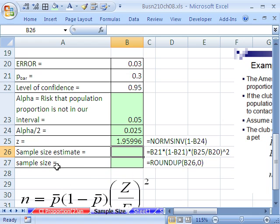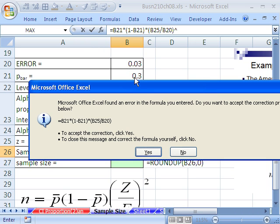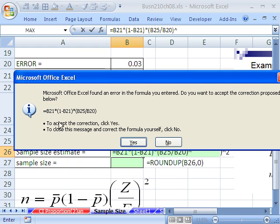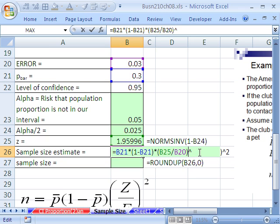Now our formula here: P times 1 minus P, and then z divided by error squared. So equals, we get our P bar times 1 minus our P bar, times, and then in parentheses we'll take our z divided by our error and Shift 6. I accidentally hit Enter before I wanted it. A rule of thumb is when you're doing formulas, never accept what Bill Gates and his friends are suggesting. Never click that one. Always click No, and then OK, and then edit it yourself.